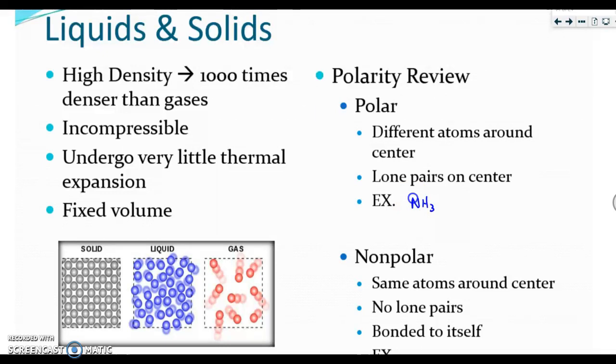They also can have lone pairs on the center. NH3, if I drew its Lewis dot structure, would look like this and it has a lone pair on the center. Therefore, it is considered polar.